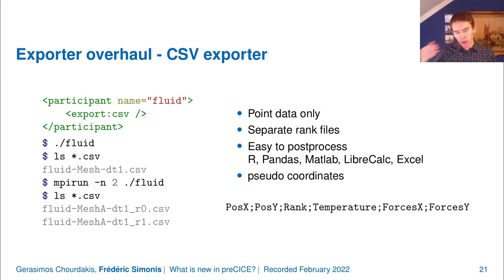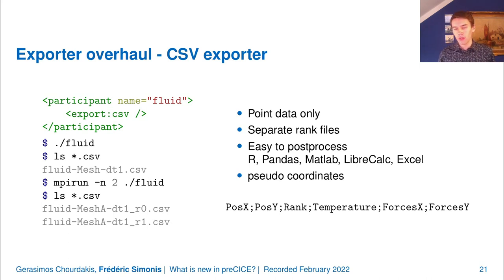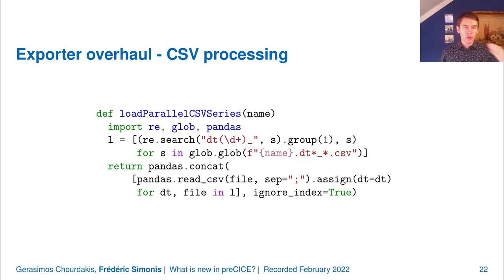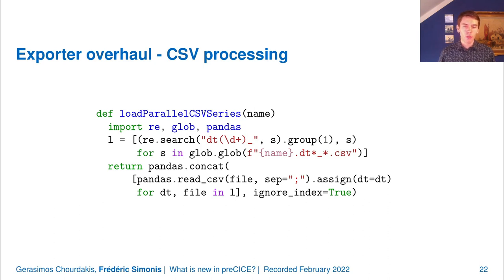The CSV format is also very intuitive if you use pseudo-coordinates, where your coordinate system is more like an ID system mapping mesh vertices from one pseudo-coordinate system to another. The header shows individual components in columns. Here is an example of how to load this in Python and build a single pandas DataFrame containing all timesteps from all ranks of a parallel simulation for a specific mesh name.